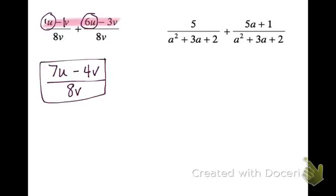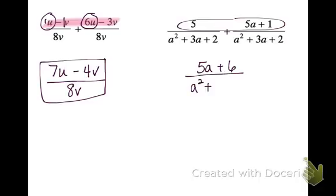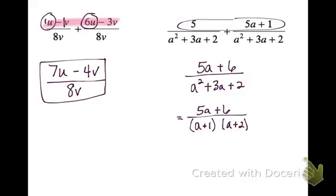For this next problem, we have common denominators as well, so I'm just going to combine the top like terms. I have 5a plus 6 — 5 plus 1 is 6 — all over a squared plus 3a plus 2. To simplify further, a squared plus 3a plus 2 factors to a plus 1 times a plus 2. I can't factor 5a plus 6 or pull out a GCF, so this is my final answer. Always make sure you've factored everything completely in case something cancels out.